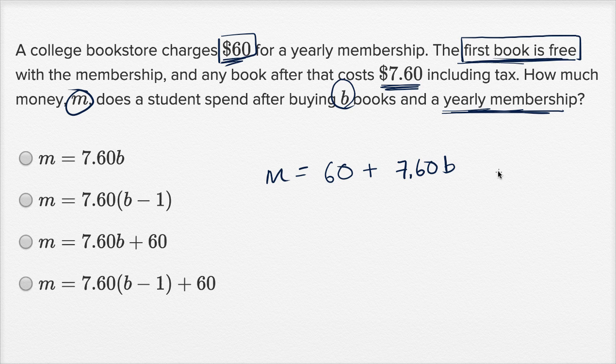The first book is free. So if you buy one book, you're not going to pay $7.60, you're going to pay nothing. If you buy two books, you're not going to pay $14.20, you're only going to pay $7.60.